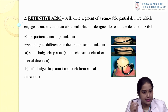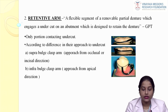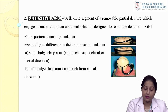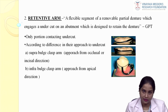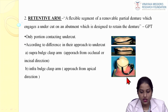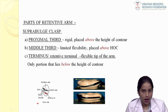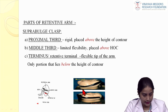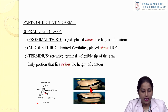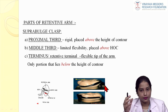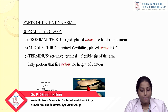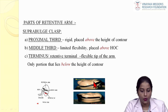The retentive arm provides retention. Based on the approach of engaging the undercut, a clasp can be a suprabulge or an infrabluge clasp. A suprabulge retentive arm engages the undercut from the occlusal direction, whereas an infrabluge clasp arm engages the undercut from the apical or gingival direction. For a suprabulge clasp, the retentive arm has three parts: proximal third (the body), which is rigidly placed above the height of contour; middle third, which is limited flexible and placed above the height of contour; and distal third, which is flexible and placed below the height of contour.